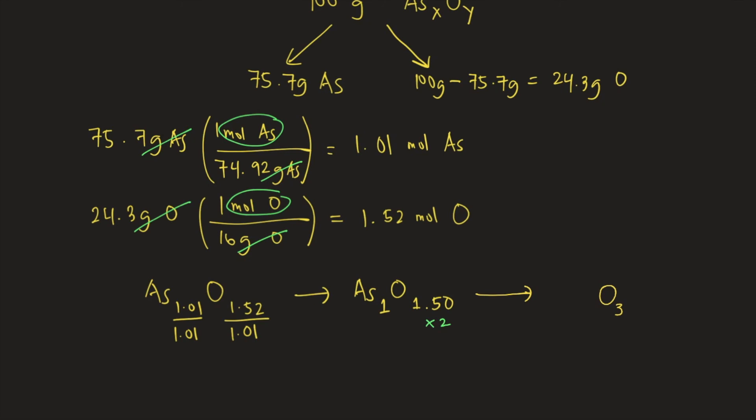So of course, if you multiply the subscript of oxygen, you must also do the same thing for arsenic. You also need to multiply the subscript of arsenic by 2. So 1 times 2, that is equal to 2.